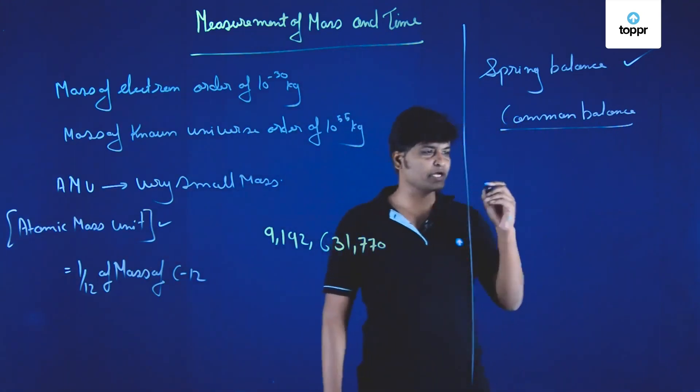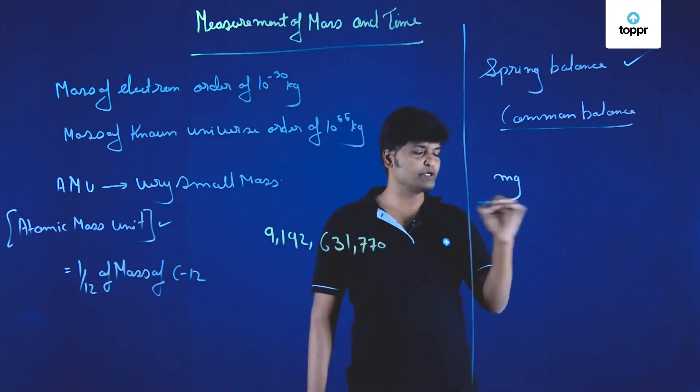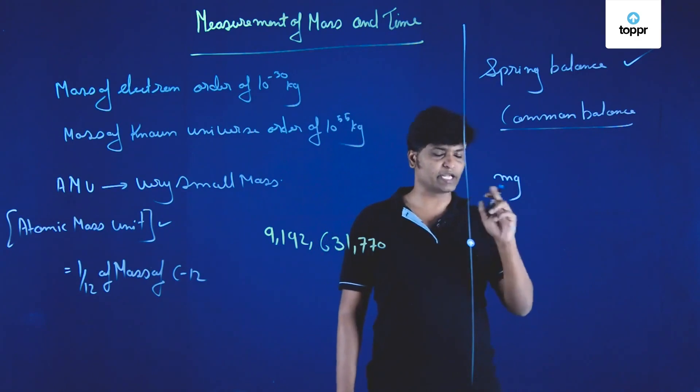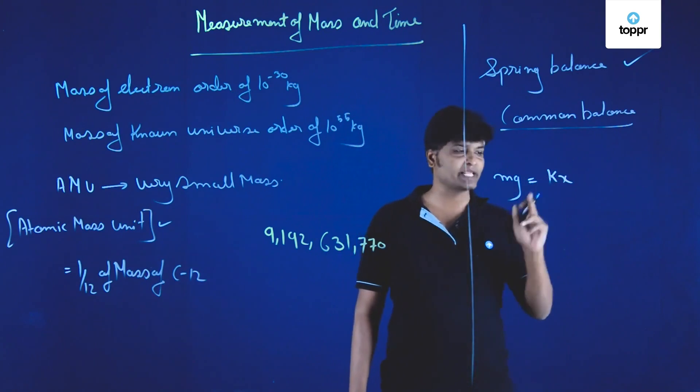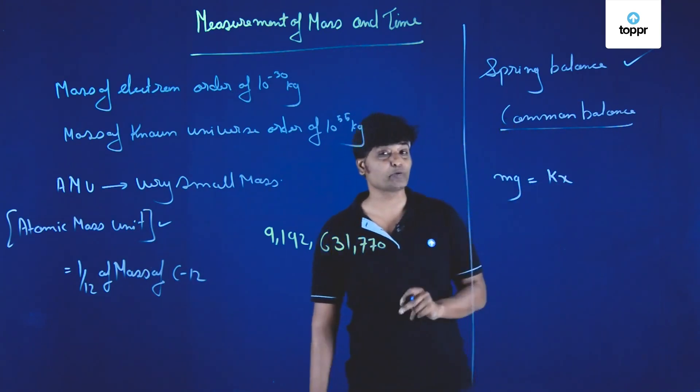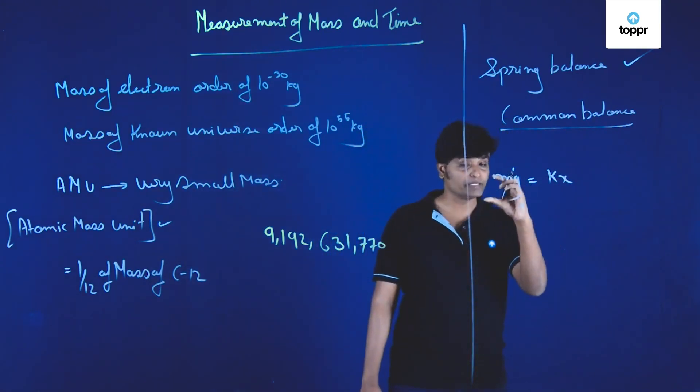In that particular case, gravitational force M times G, in case of spring balance, equals K times X, where K is the spring constant and X is the displacement made by the spring.